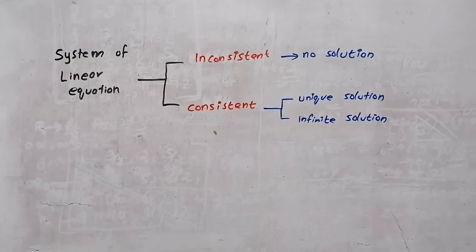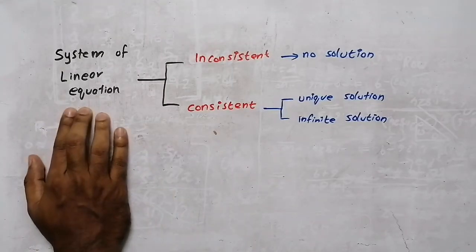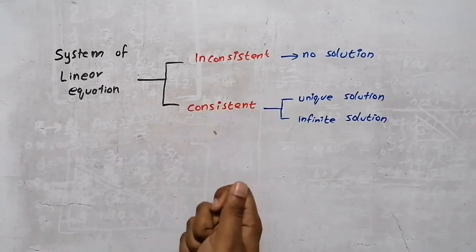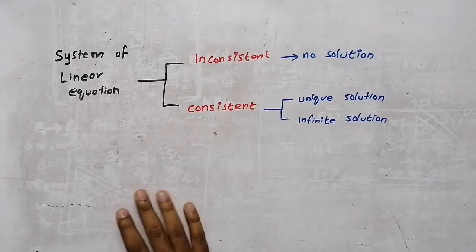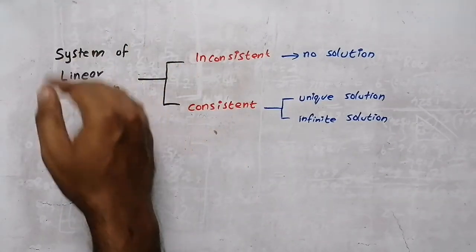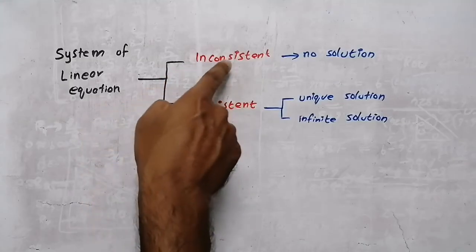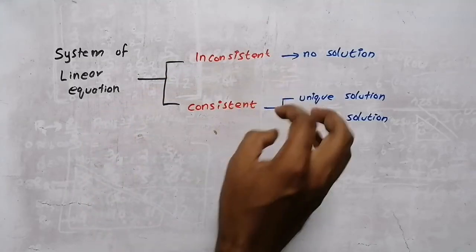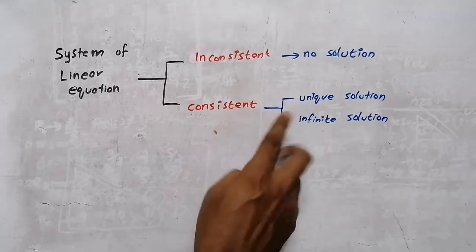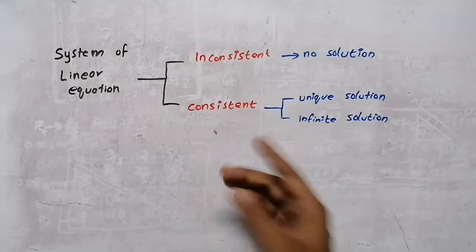Now we are going to learn about a system of linear equations — whether it is consistent or inconsistent. There are two conditions. If it is inconsistent, there is no solution. If it is consistent, there are two cases: one is a unique solution and one is an infinite solution.